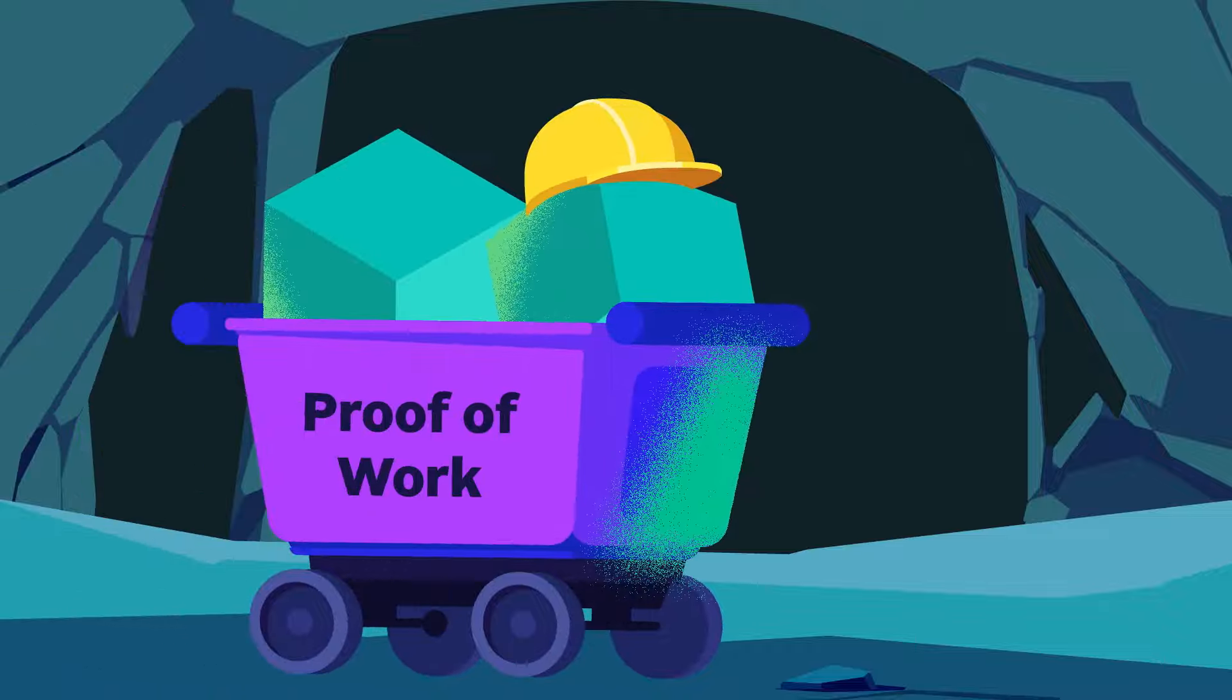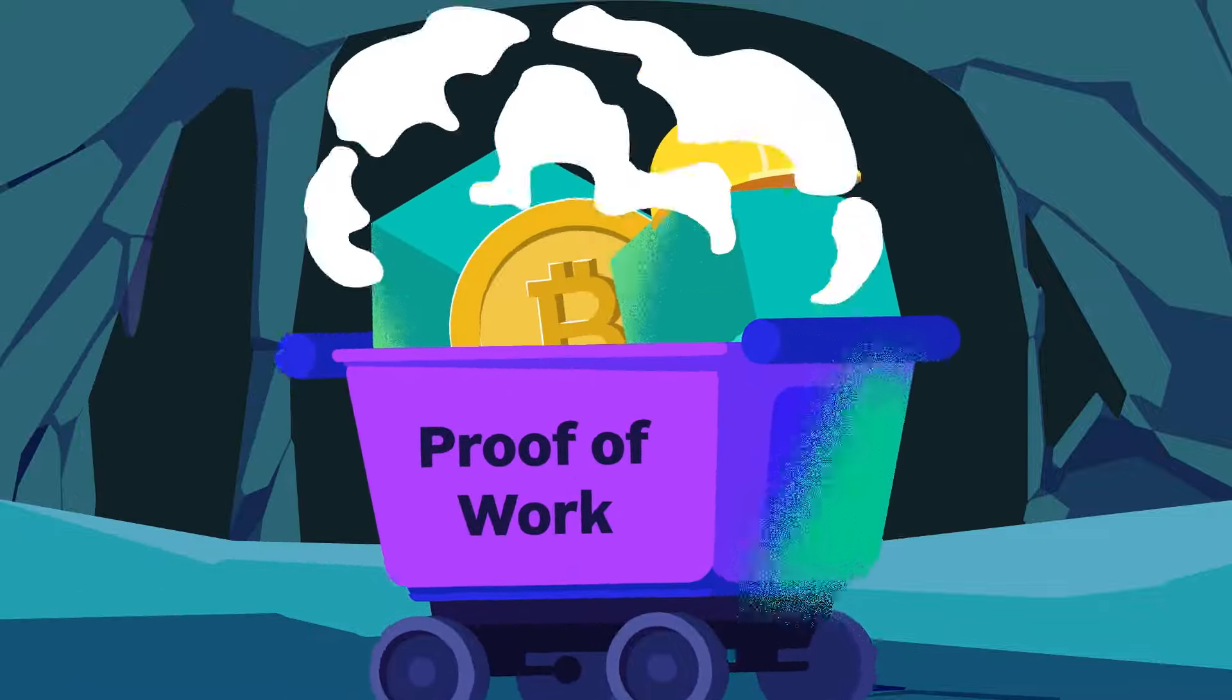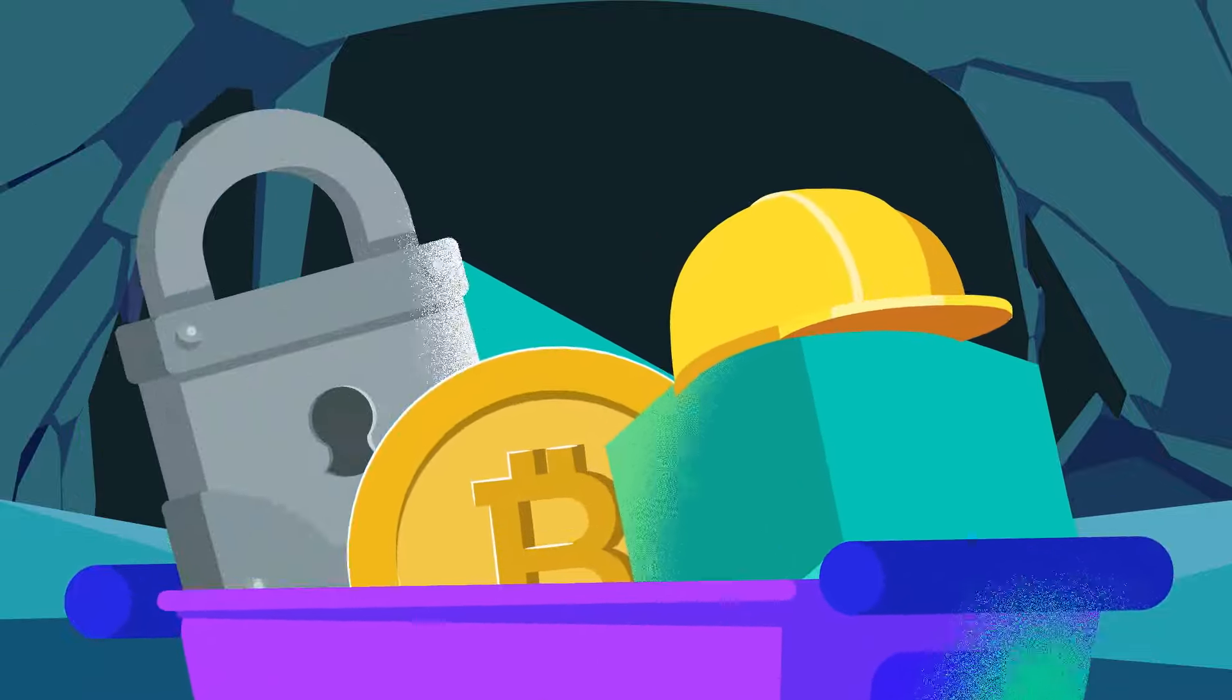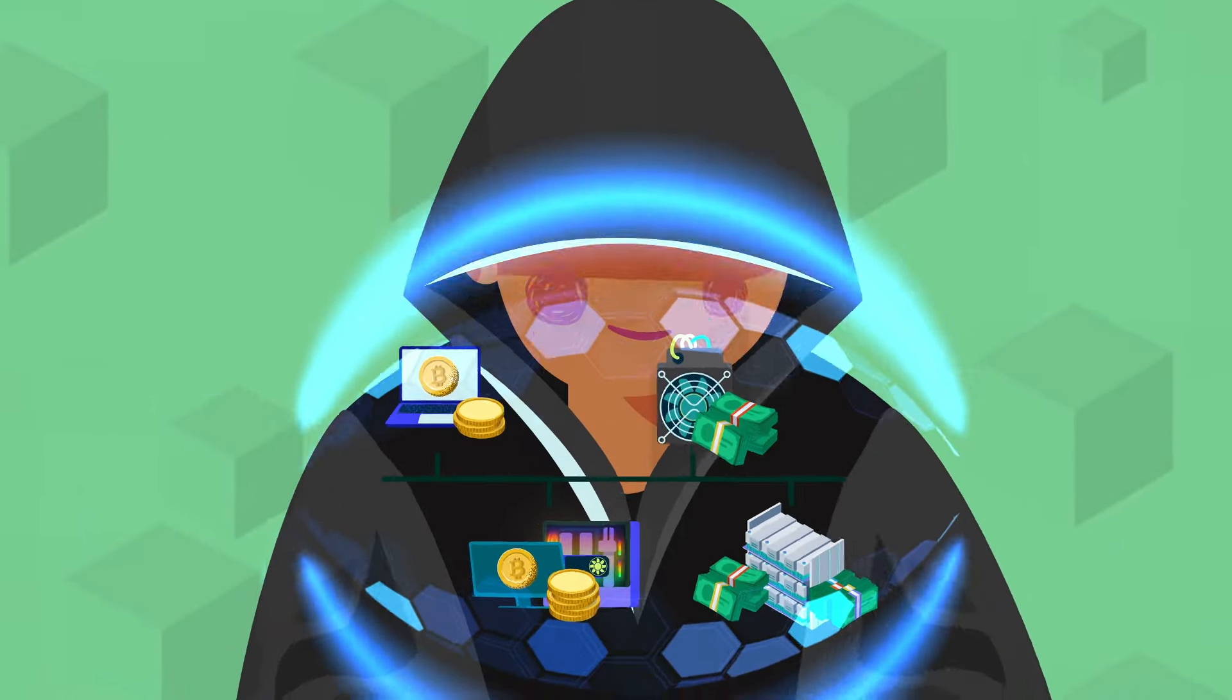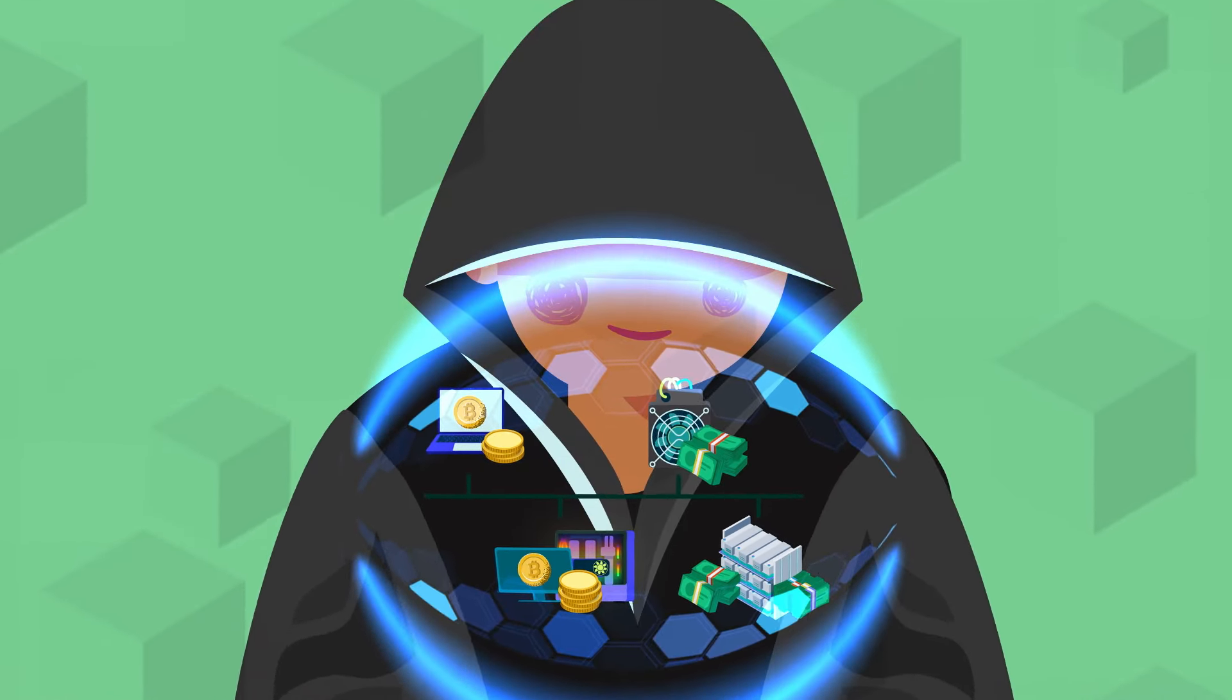Therefore, aside from adding blocks and issuing new Bitcoin, proof-of-work helps ensure the security of the network. As more participants join and the value of the Bitcoin network increases, it becomes increasingly more difficult and expensive to attempt fraudulent transactions or to tamper with the blockchain.